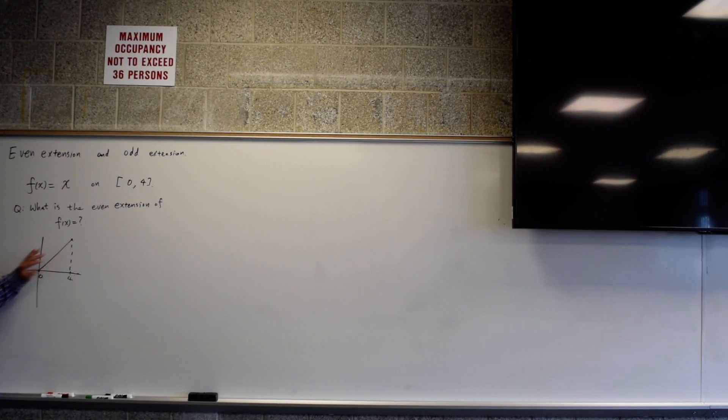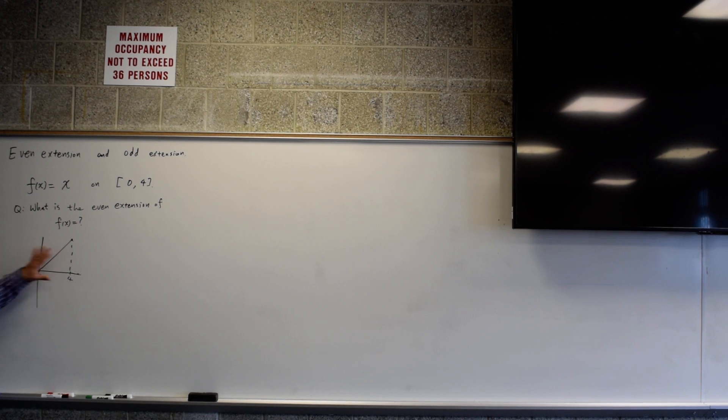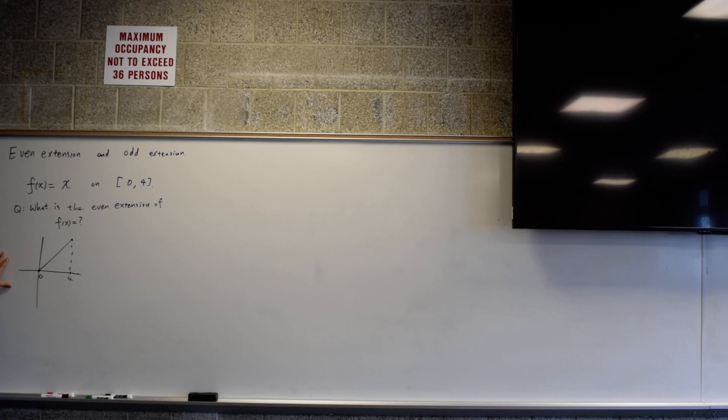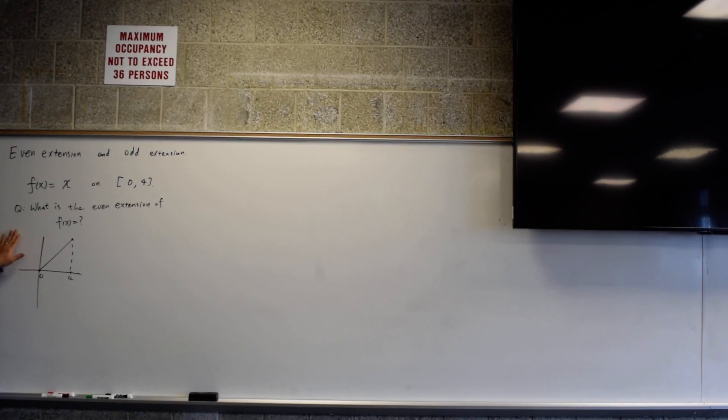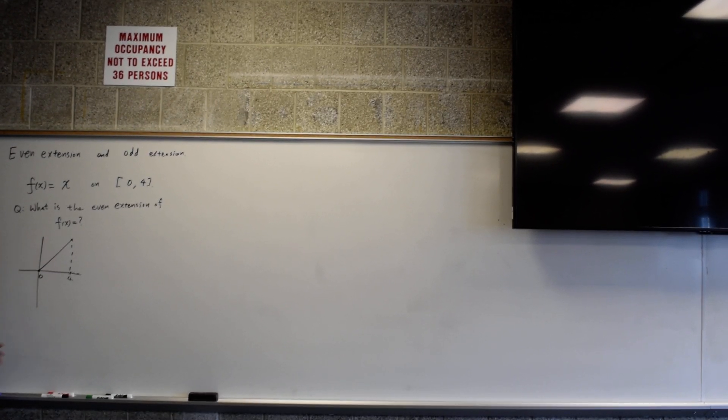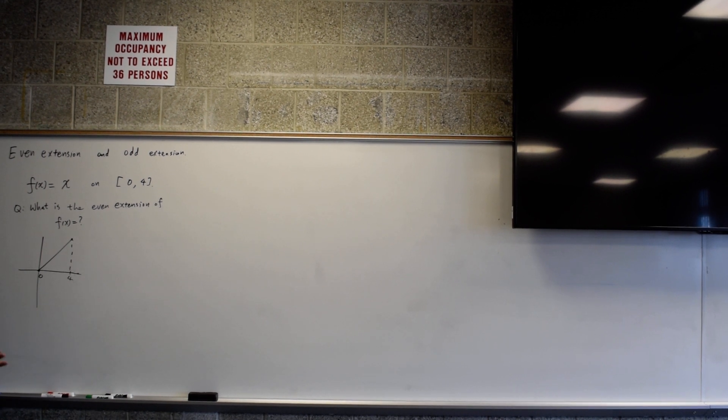And since this doesn't have a left side, you can't talk about the symmetry. You can't say this is an even function or an odd function. However, you can think about an extension of this function so that it's defined from negative 4 to 4. So we're trying to fill in this unknown part here, and we want to fill in this unknown part so that the resulting function is an even function. That's what an even extension is.